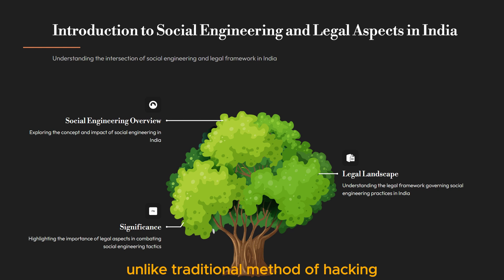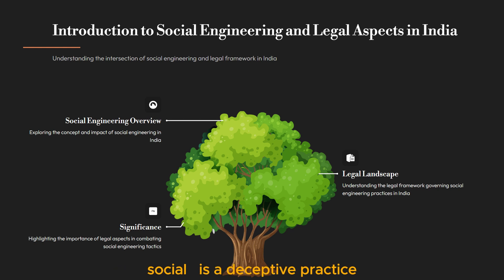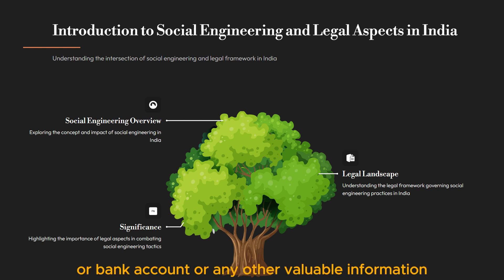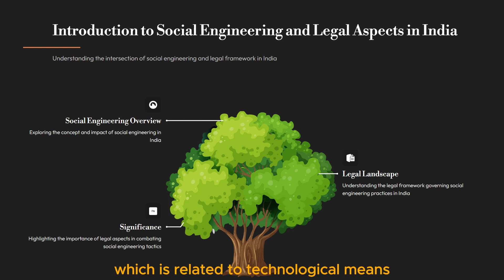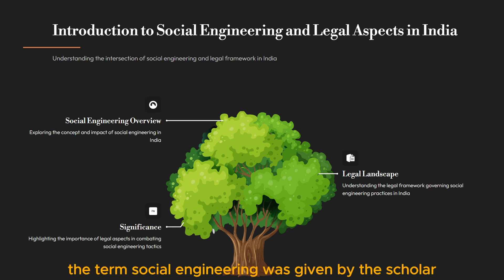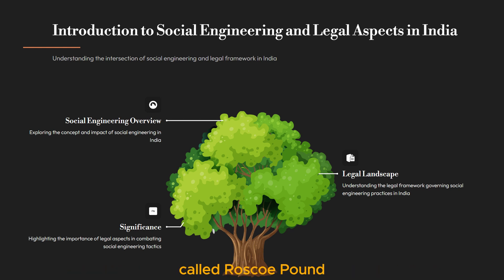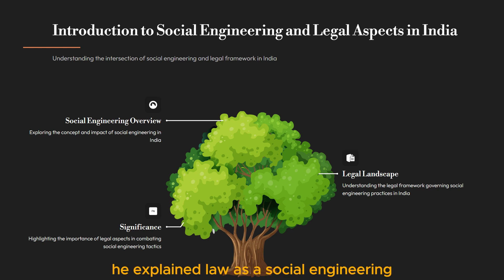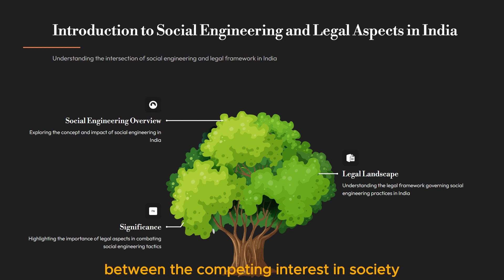So basically, unlike traditional methods of hacking which exploit technical vulnerabilities, social engineering is a deceptive practice that manipulates human psychology to gain access to sensitive information such as one's system, bank account, or any other valuable information related to technological means. If we go back to history, the term social engineering was given by the scholar Roscoe Pound, who worked under the sociological school of jurisprudence. He explained law as a social engineering, meaning a balance between competing interests in society.